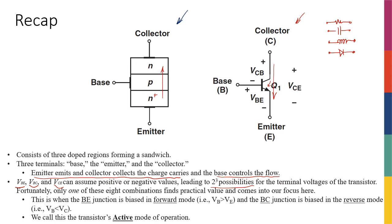Fortunately, only one of these eight combinations has practical value for us: when the VBE — the base-emitter junction — is in forward bias, meaning VBE is greater than zero, and the base-collector junction is in reverse bias. We have two diodes here, and the only combination we care about is when the base-emitter diode is forward biased and the base-collector diode is reverse biased. This results in a current flowing from emitter to collector, controlled by the voltage at the base.